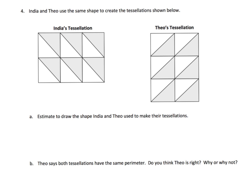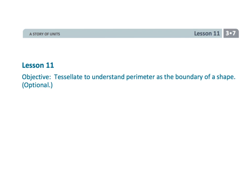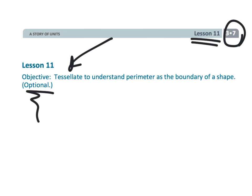The last one: India and Theo use the exact same shape to create their figures. Here's India's tessellation and here's Theo's tessellation. The question is to estimate and draw the shape they used — what figure did they use to make their tessellation? There are a couple of possible answers that would work. I'll let you listen to the wonderful answers your students come up with, because I don't want to give it away. What shape is constantly repeating in India's and Theo's shapes? And how can you compare their perimeters — whose is longer, or are they the same? That wraps up third grade module 7 lesson 11 — an optional lesson where we tessellate figures to learn about perimeter.